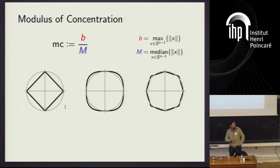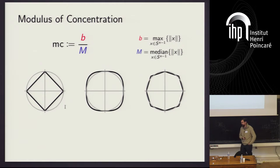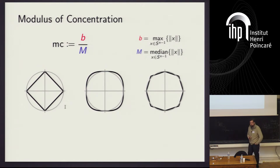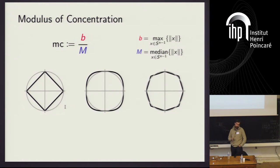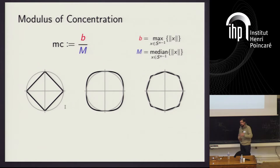Before I can tell you about our main result, I need to give you a definition. We're going to call this the modulus of concentration — a ratio of two parameters, b and m. I take the norm and look at all values over the L2 unit sphere. b is the maximum value the norm takes over the unit sphere. m is the norm's median value: if I randomly sample a vector from the unit sphere and plug it into the norm, I get a random variable, and I find the median of its distribution.